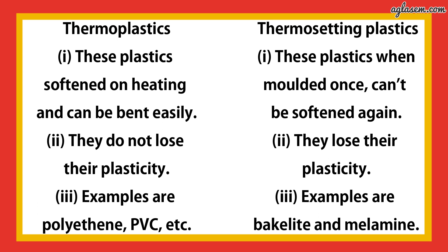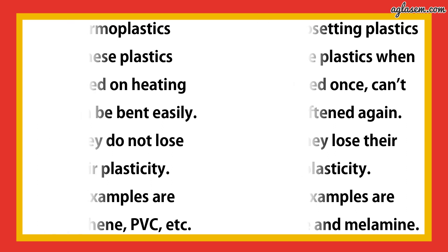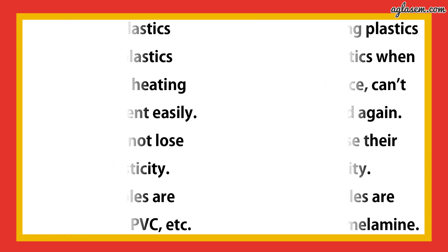Examples of thermoplastics are polythene, PVC, etc. Whereas examples of thermosetting plastics are bakelite and melamine.